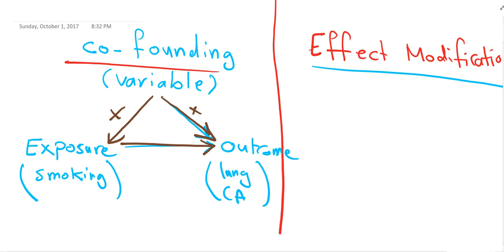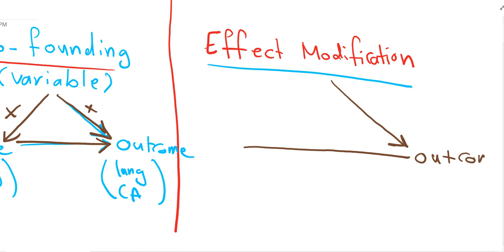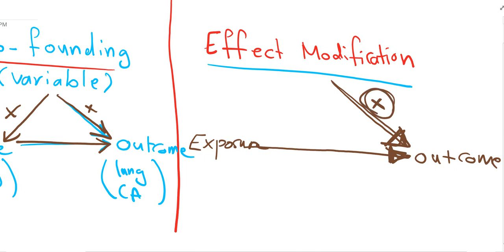Now let's go to effect modification. Effect modification is a variable that affects only the outcome. I have an outcome like a disease, like lung cancer, and I have an exposure, maybe a treatment exposure. So exposure leads to a specific outcome. Effect modification has only an effect on the outcome — it has no effect on the exposure. It's only in that direction.